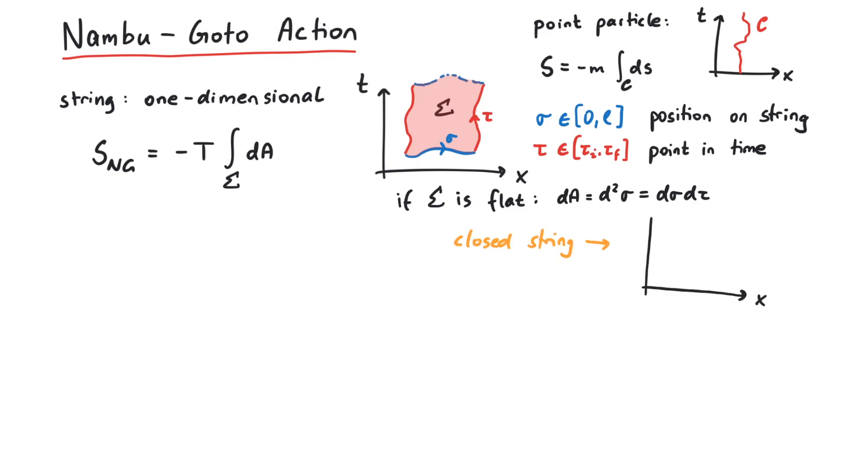For example, if we consider a closed string, the world sheet looks like a cylinder. Therefore, we have to include the square root of the determinant of the metric on the world sheet. This makes the integral coordinate independent, since the root of the metric determinant is equivalent to the Jacobian determinant when we perform a coordinate transformation.